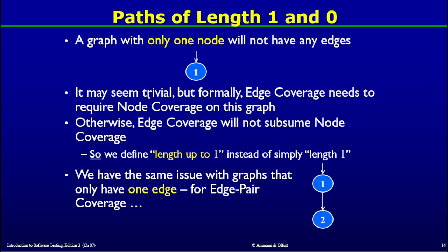Before that, we need to understand this concept. For example, if there is a graph with just one node as shown here, it has no outgoing edges to other nodes. Formally, edge coverage needs to subsume node coverage on this graph, and we need to make sure that when edge coverage is achieved on such a graph, it also automatically fulfills the node coverage criteria.